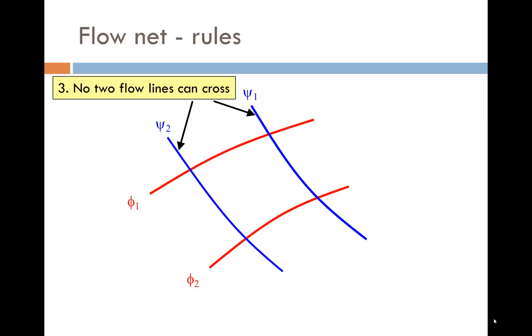Number 3: No two flow lines can cross each other, as no one molecule of water can travel in two different directions.